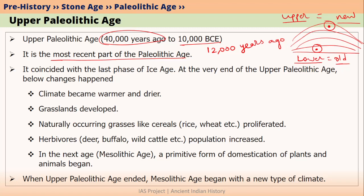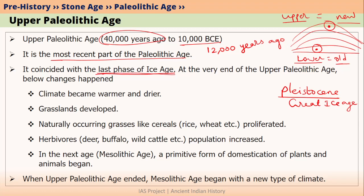If we look at the climate during the Upper Paleolithic Age, it was basically the last phase of the Ice Age. We know that Paleolithic Age coincided mostly with the Pleistocene Epoch, also called the Great Ice Age. By the end of the Paleolithic Age — during the Upper Paleolithic Age — it was the last phase of Ice Age, and when Upper Paleolithic ended, Ice Age also ended.